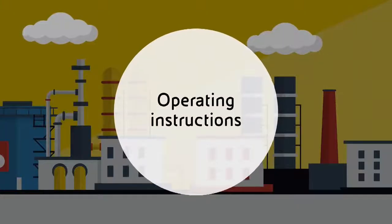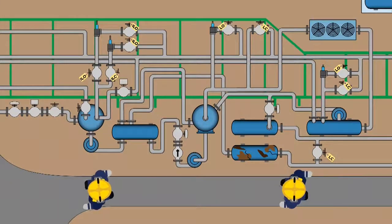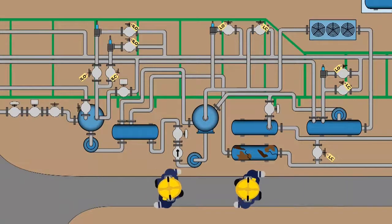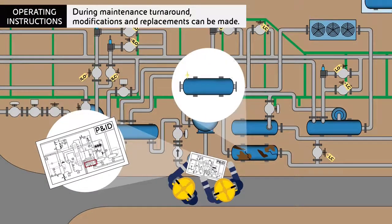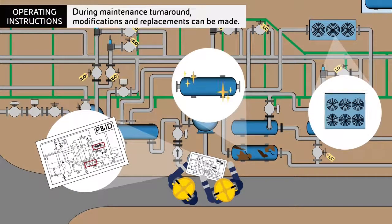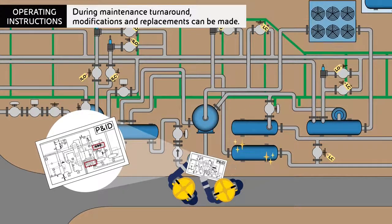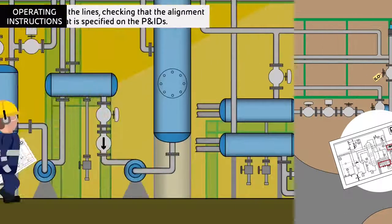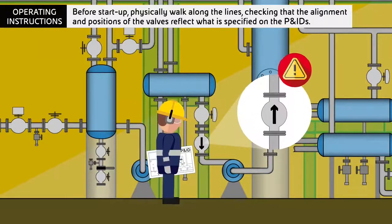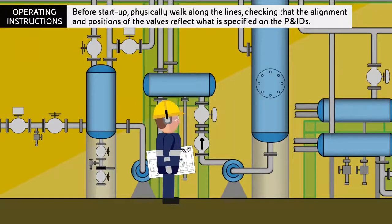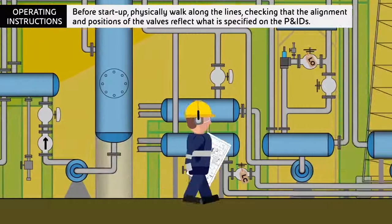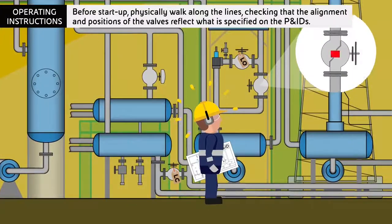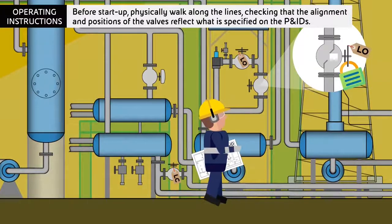Operating instructions. During a maintenance turnaround, modifications and replacements can be made. Before start-up, physically walk along the lines, checking that the alignment and positions of valves reflect what is specified on the P&IDs.